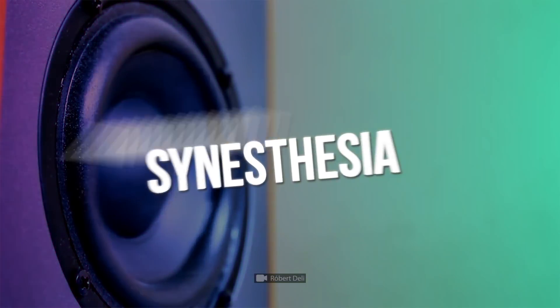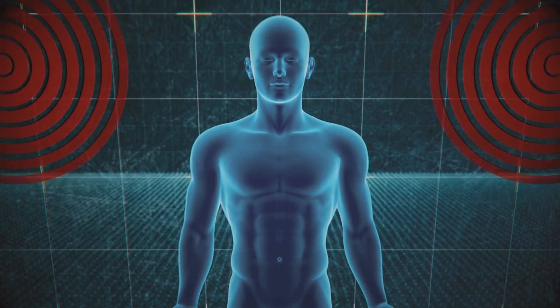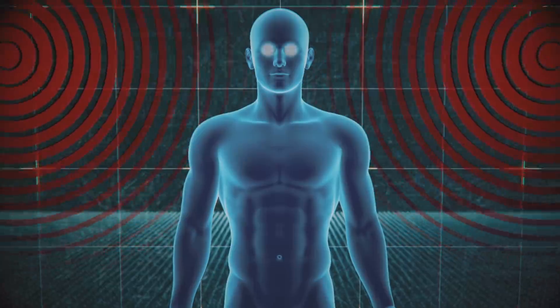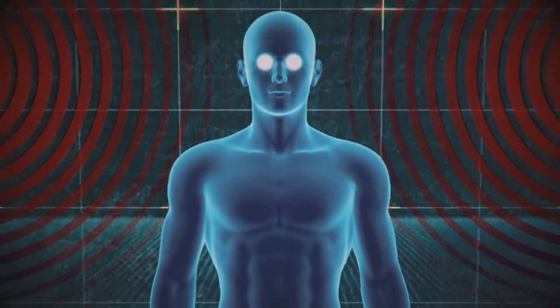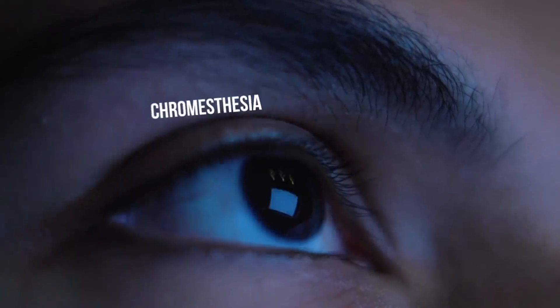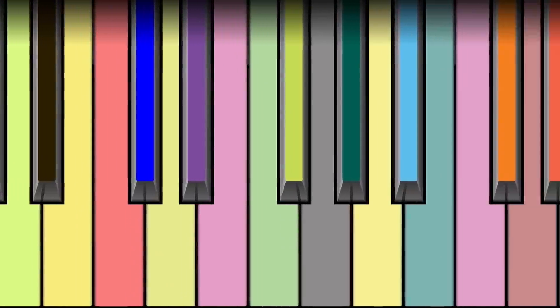This condition is called synesthesia. In such a case, the stimulation of one sensory system, such as hearing, simultaneously activates sensations in another one. People with something called chromesthesia, a variety of synesthesia, can see the color of different sounds.